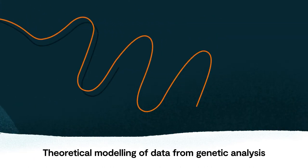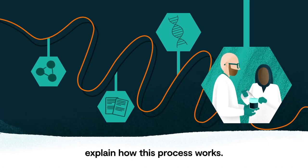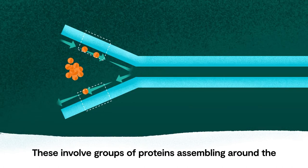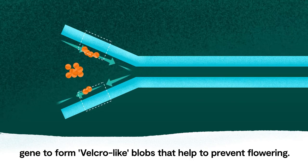Theoretical modelling of data from genetic analysis has predicted new mechanisms that could explain how this process works. These involve groups of proteins assembling around the gene to form velcro-like blobs that help to prevent flowering.